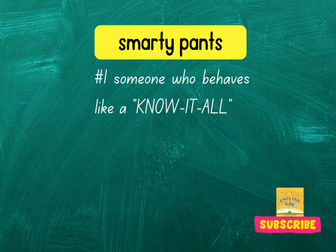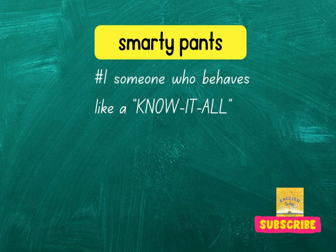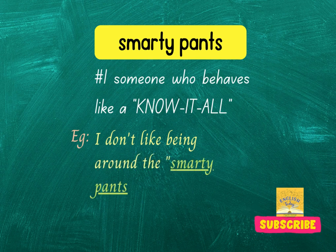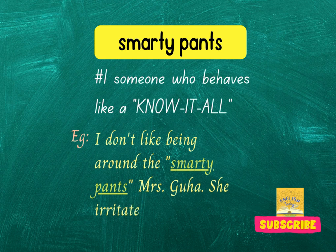The first context means someone who behaves like a know-it-all. How can you use it in a sentence? You can say, 'I don't like being around the smarty pants Mrs. Kuha. She irritates me.' Mrs. Kuha is a smarty pants.